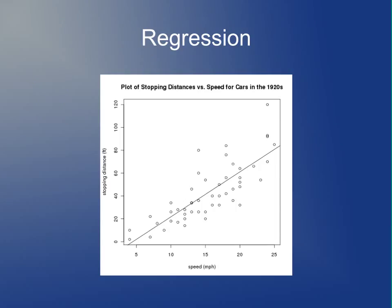If you remember the example from the previous lecture, we talked about the speed and stopping distances of cars. A scatter plot and a straight line approximation show that if a car were going about 20 miles per hour, we would predict it would go about 60 feet after you slammed on the brakes before coming to a complete stop. Today we'll discuss how you would calculate such a regression line and why you would want to.